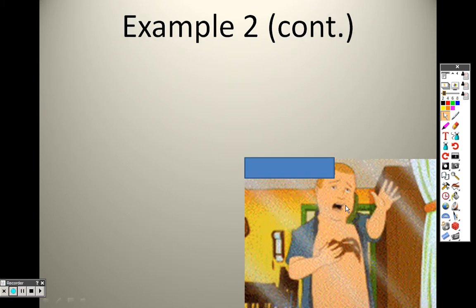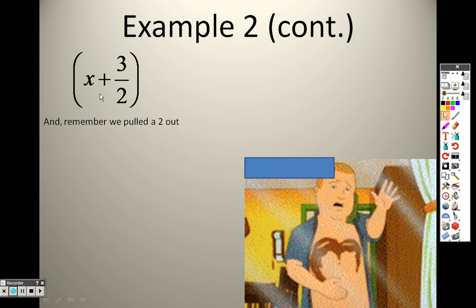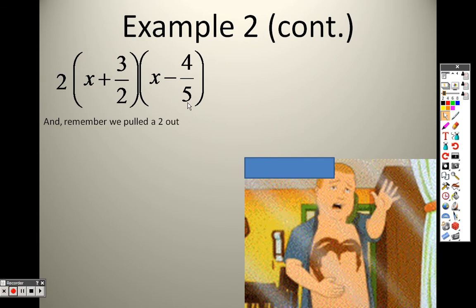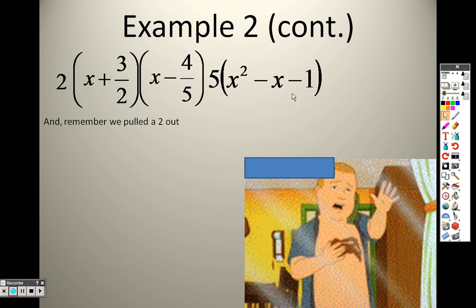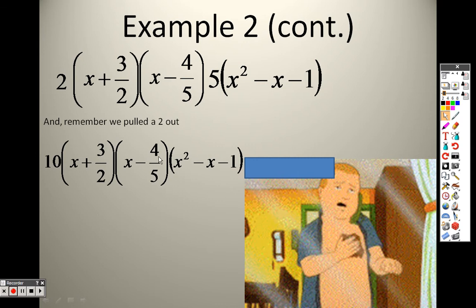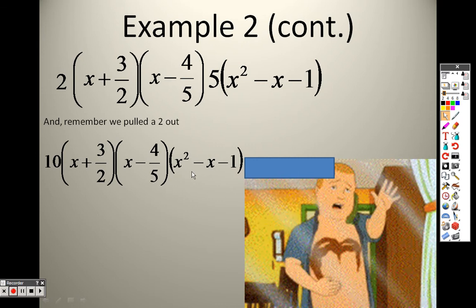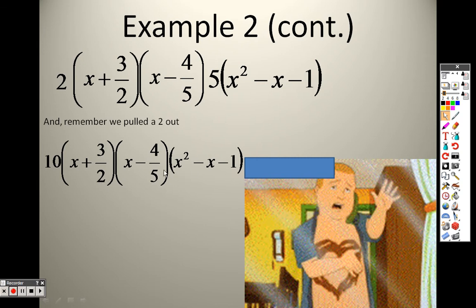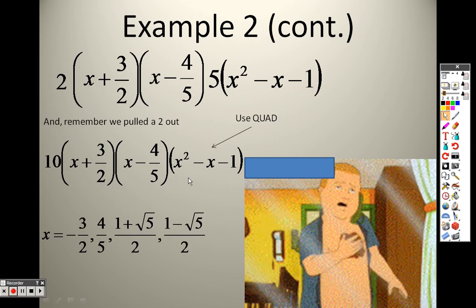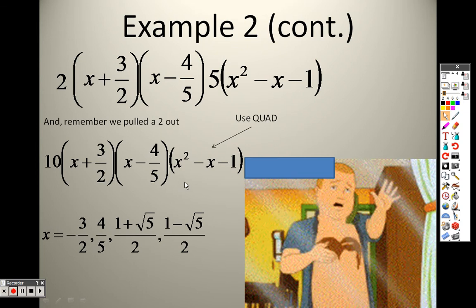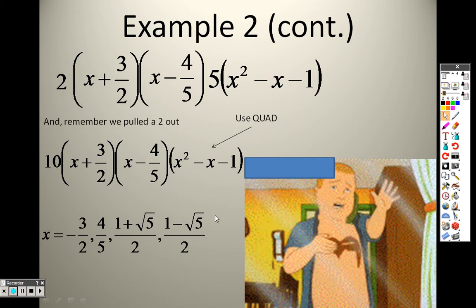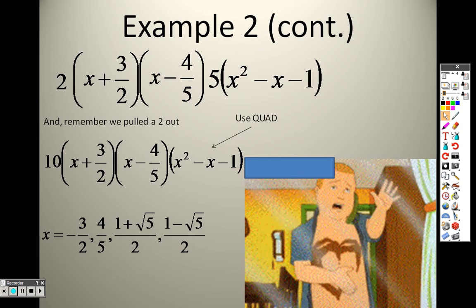So let's check everything out. This is the first factor that I found, right? Remember, I pulled that out. I also pulled the 2 out from before. So there's a 2 I pulled out from before. This was the second one I found, x minus 4 fifths, okay? And here's the 5 and the x squared minus x minus 1. Well, that 5 and 2, I can pull together. 5 times 2 is 10. Here's the x plus 3 halves. Here's the x minus 4 fifths. And there is x squared minus x minus 1. So when I go to figure out what the answers are, I can solve that easily. That's negative 3 over 2. I can solve that easy. That's 4 fifths. And this, I need to use the quad to find out what the answer is. So negative 3 over 2, 4 fifths. And when I go and use the quadratic formula, I get 1 plus root 5 over 2 and 1 minus root 5 over 2. So there's my 1, 2, 3, 4 different answers. And the reason there's 4 answers, remember, it was x to the 4th when we started.